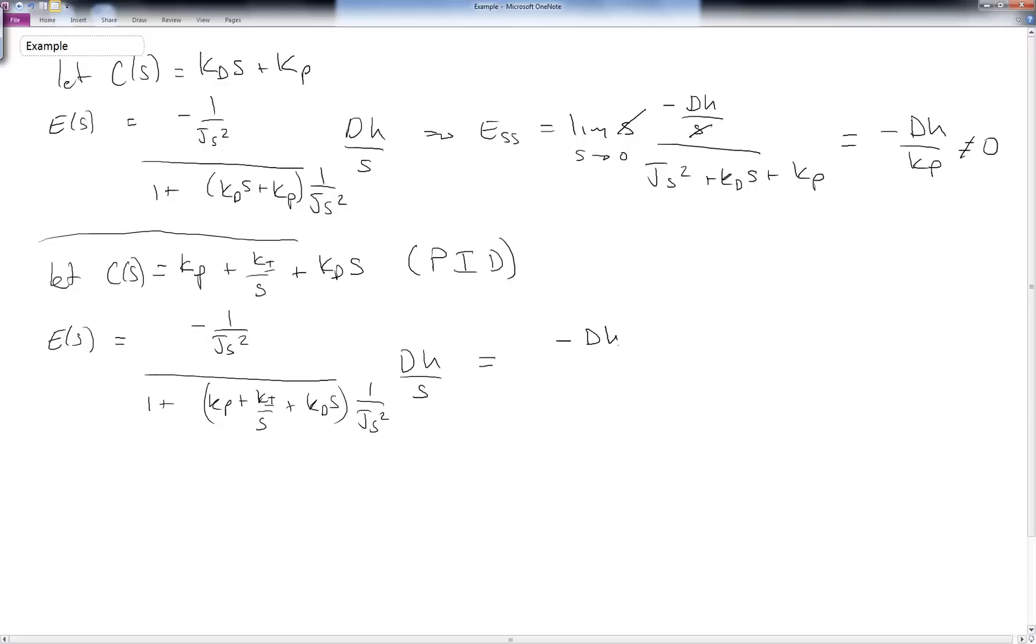Simplifying, we get minus dh over s all over j s squared plus kp plus ki over s plus kd s. Now, we don't like the fact that I have this 1 over s or this ki over s in the denominator, so we go ahead and multiply both numerator and denominator by s, which cancels the s in the numerator. But it also raises the order of the denominator by a power of s and also cancels up this s. Finally, we end up with an error of minus d times h all over j s to the third plus kd s squared plus kp s plus ki.